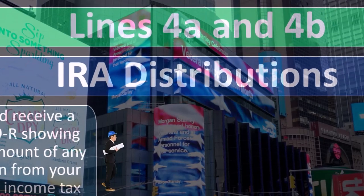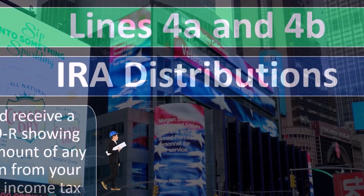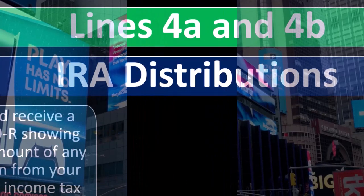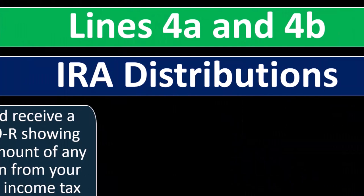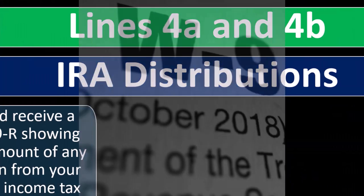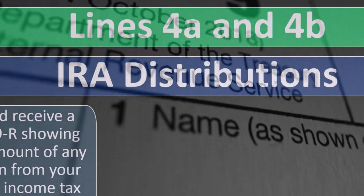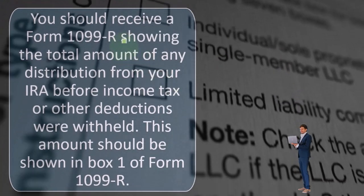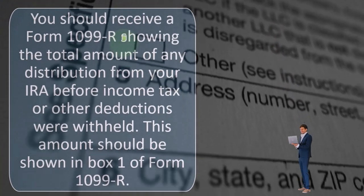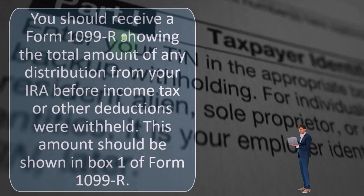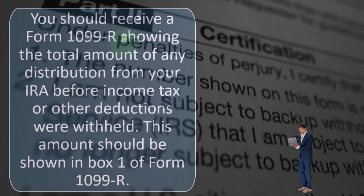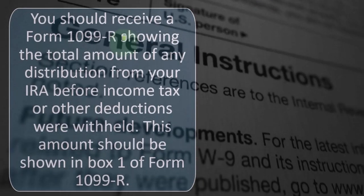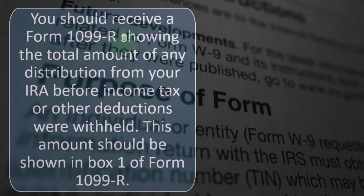You should receive a Form 1099-R showing the total amount of any distribution from your IRA before income tax or other deductions were withheld. The amount should be shown in box one of Form 1099-R. Note that if you're doing taxes for older individuals past retirement age, you would expect to receive 1099-Rs — that's a normal process because that's when retirements are happening. Those could be taxable events, and we'd have to do tax planning based on how much tax they would owe based on how much they're going to pull out of these plans.